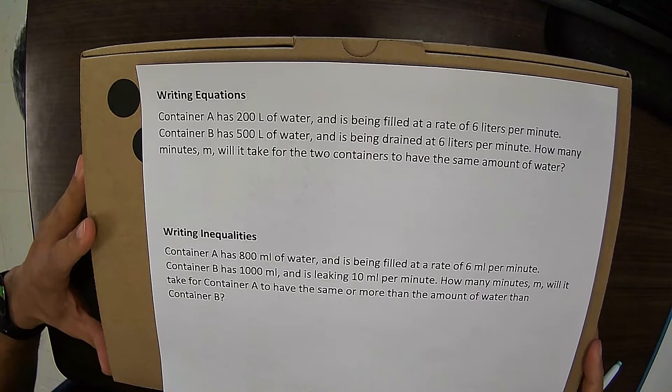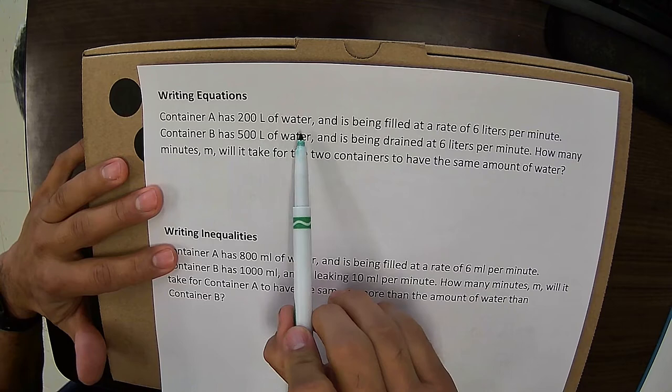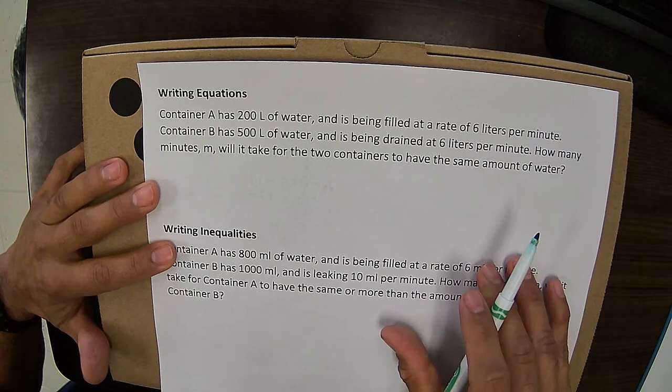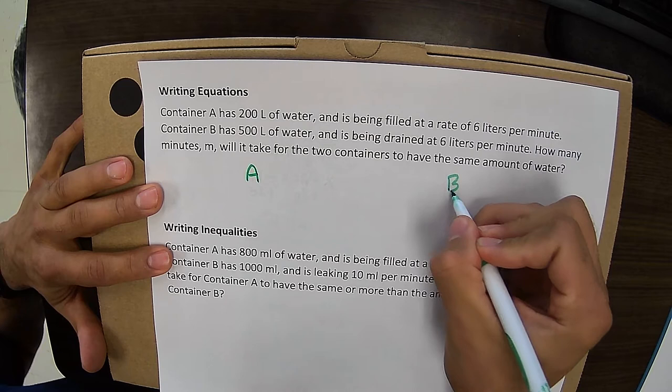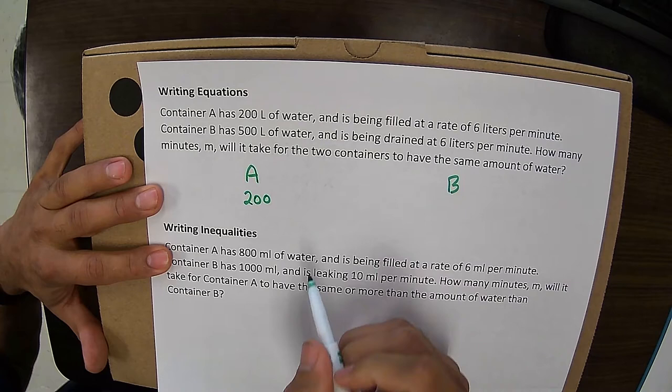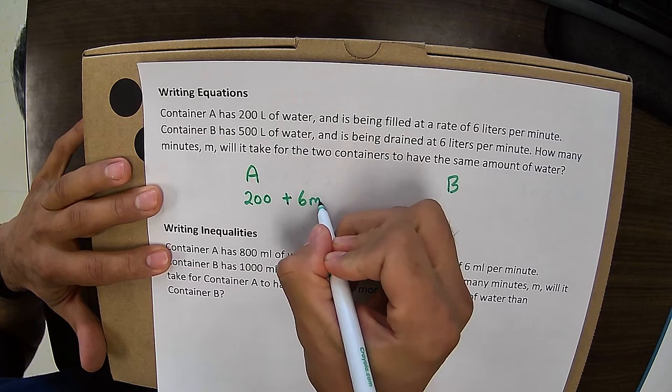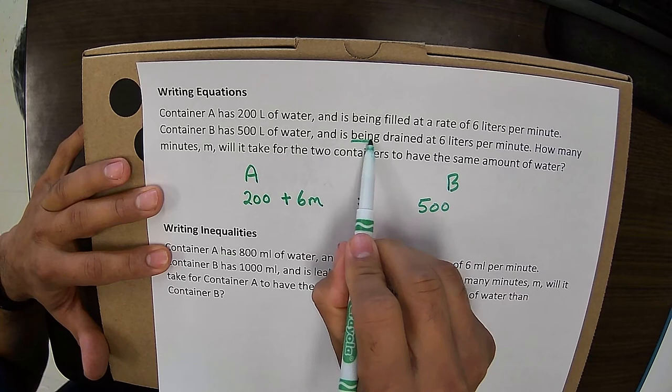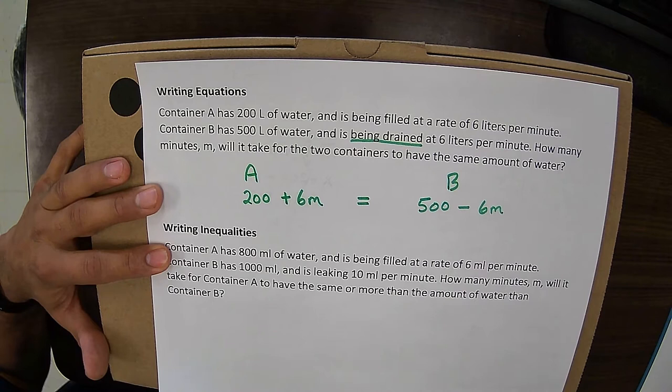I'm writing equations. And this problem says container A has 200 liters of water and is being filled at a rate of 6 liters per minute. Container B has 500 liters of water and is being drained at 6 liters per minute. How many minutes will it take for the two containers to have the same amount of water? So I want to write my expressions for both container A and container B. So container A has 200 liters and is being filled at a rate of 6 liters per minute. So since it's being filled, we're adding 6 liters per minute equal to. For container B, it has 500 liters. And here's the key words being drained. So that means it's decreasing at 6 liters per minute.